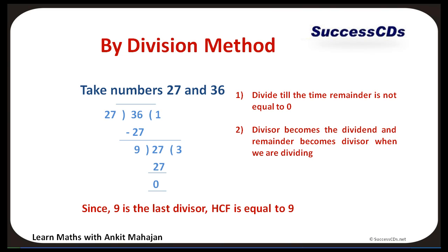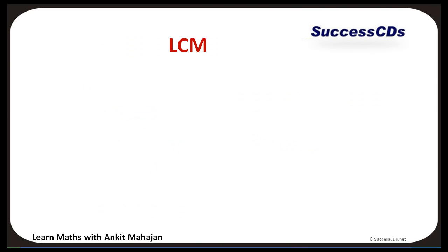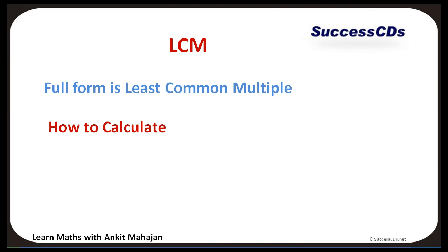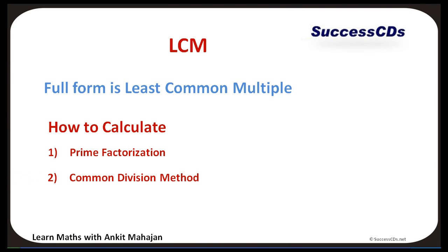The last remaining divisor is the HCF. Here, 9 is the last divisor, therefore HCF equals 9. Now let's move forward to LCM, also known as Least Common Multiple. We can calculate LCM by Prime Factorization or by the Common Division Method.